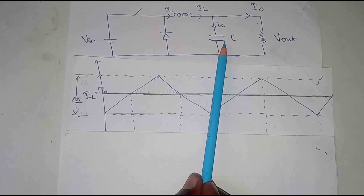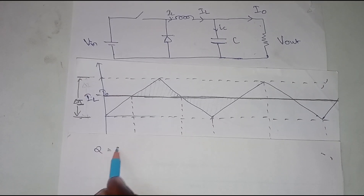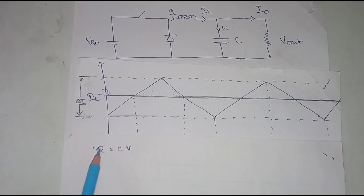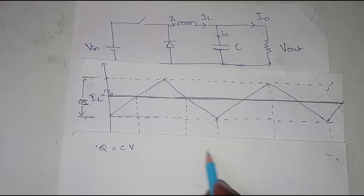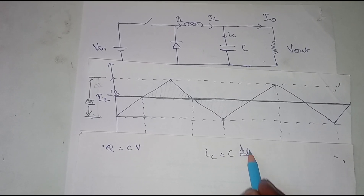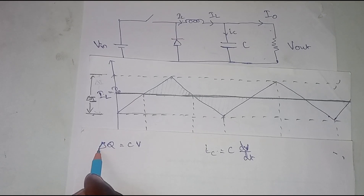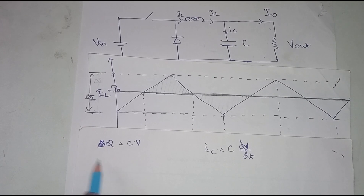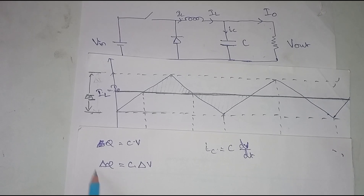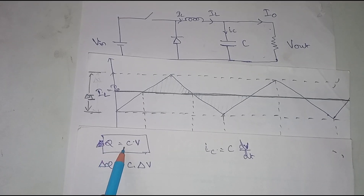Our objective is to find the minimum value of the capacitor required. We know the formula Q = C·V for any capacitor. We can also write the current formula: ic = C·dv/dt. This is equivalent to saying ΔQ = C·ΔV, which is the key equation to remember for finding the capacitor value.